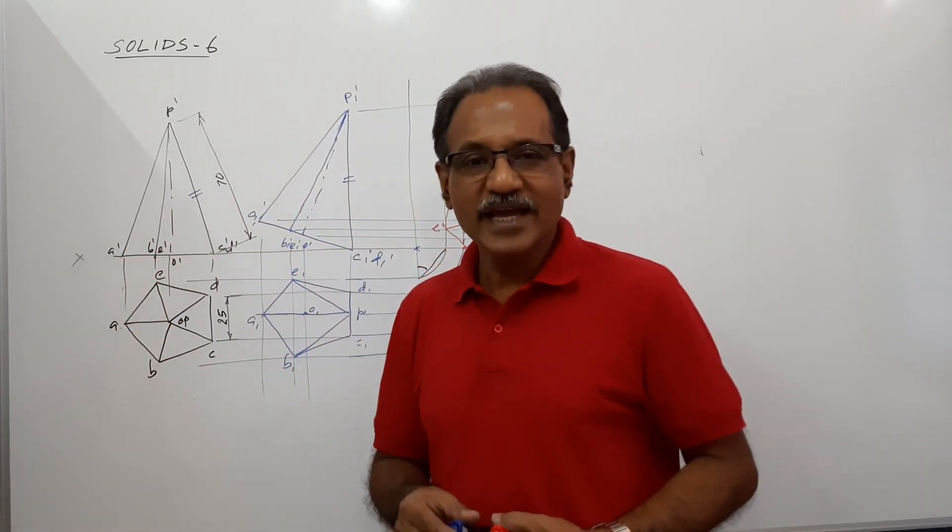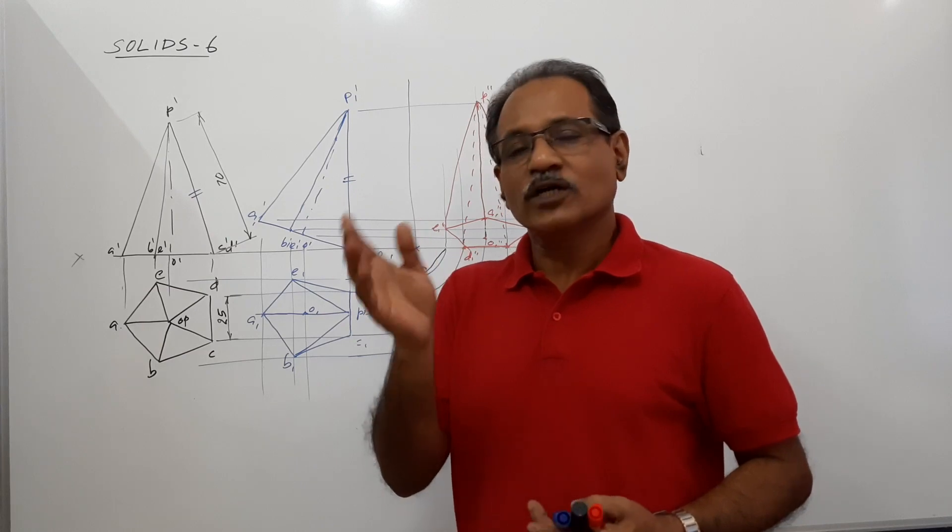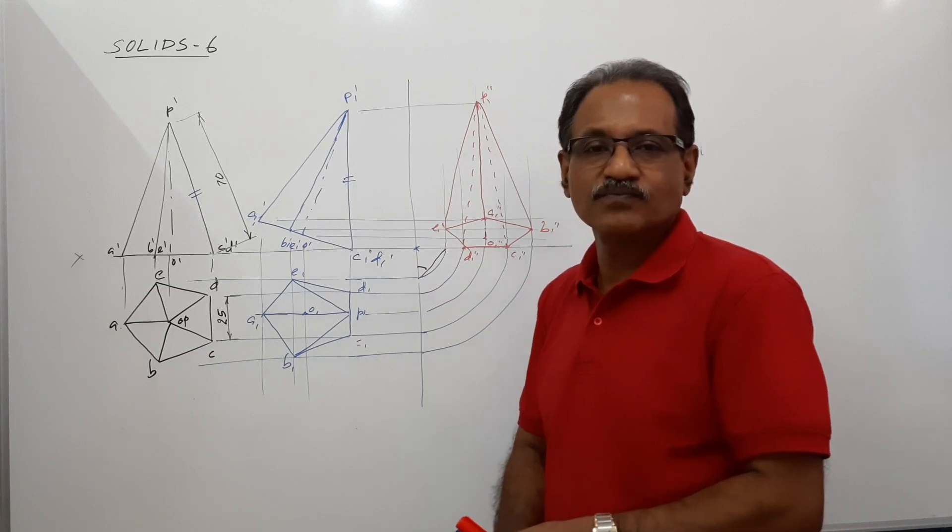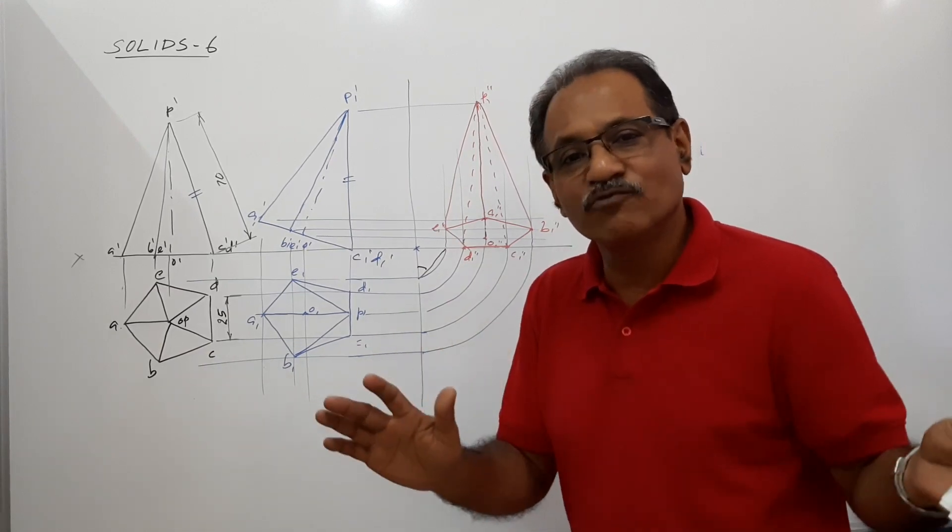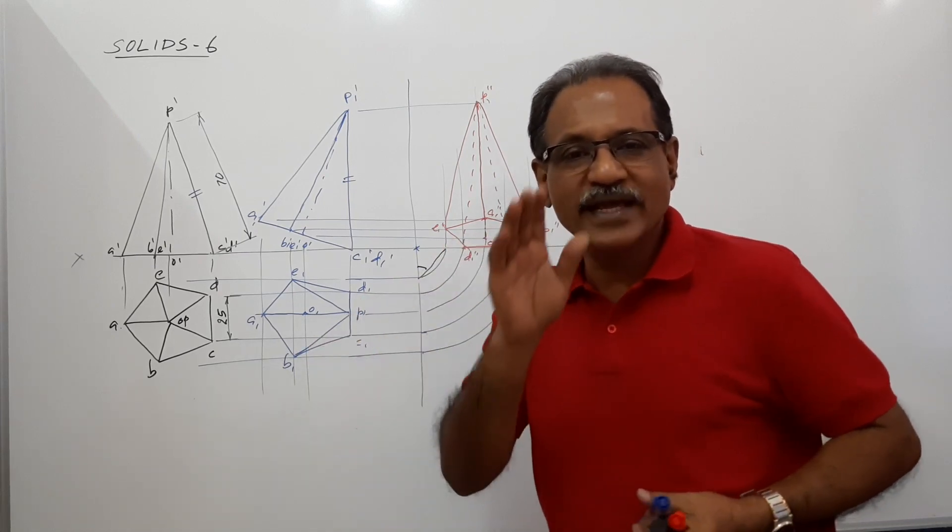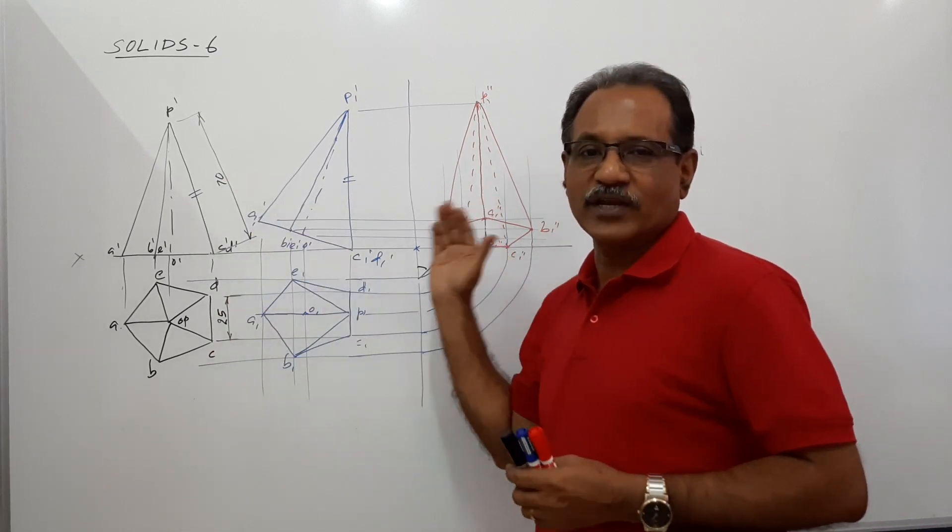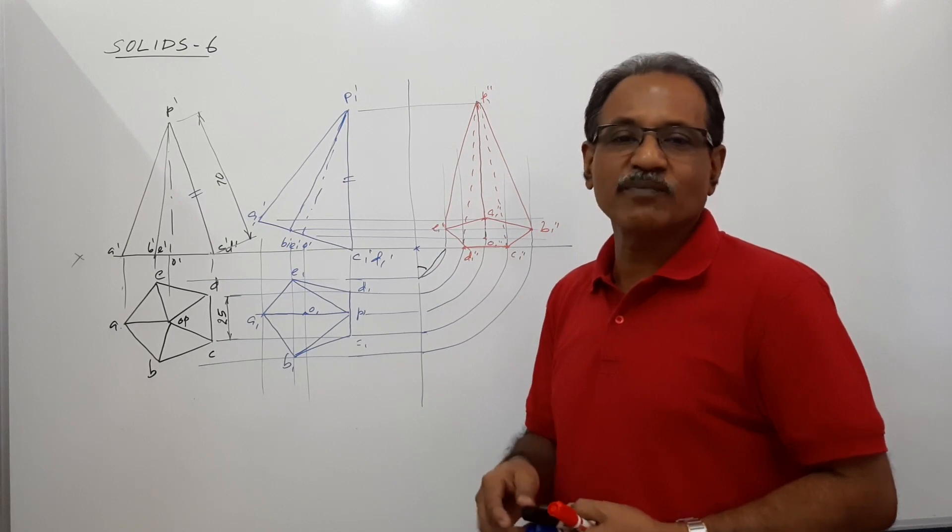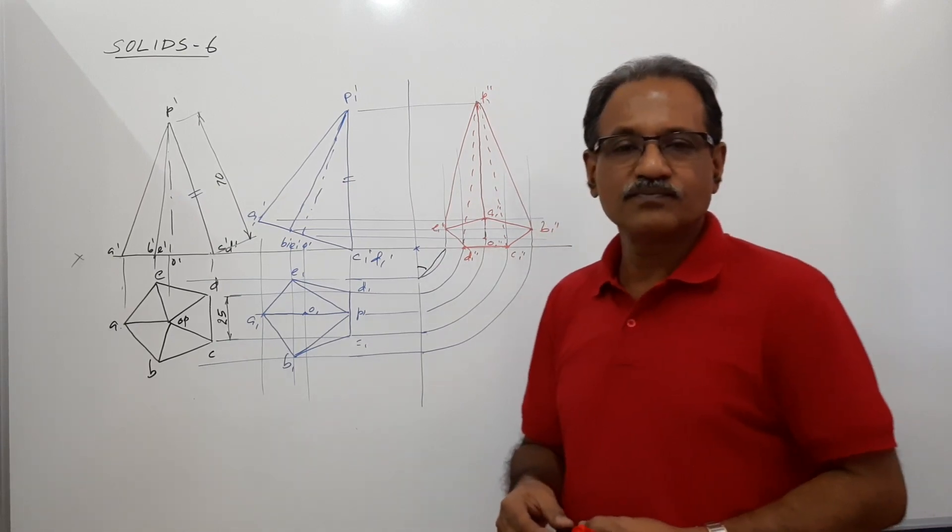I hope you understand. So in this category of problems where end views are asked, usually we will not draw auxiliary projection. End view is also an auxiliary view but we don't want to confuse people. Whenever end views are asked, conventional plan elevation redrawing method we will adopt. You adopt redrawing method when end views are asked. I hope you understand. Thank you.